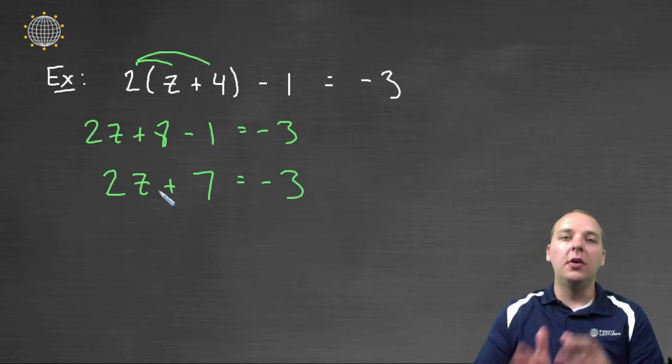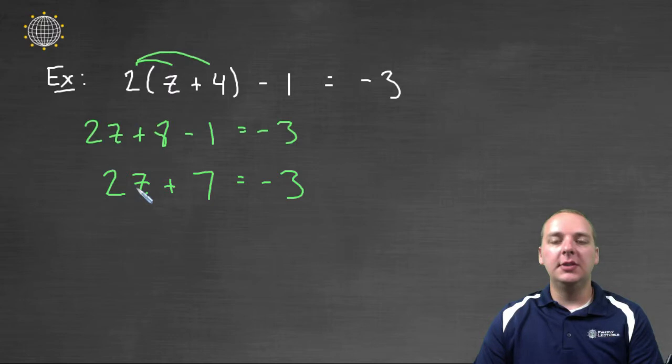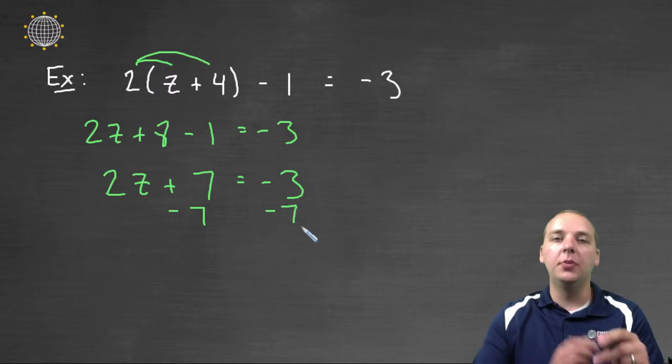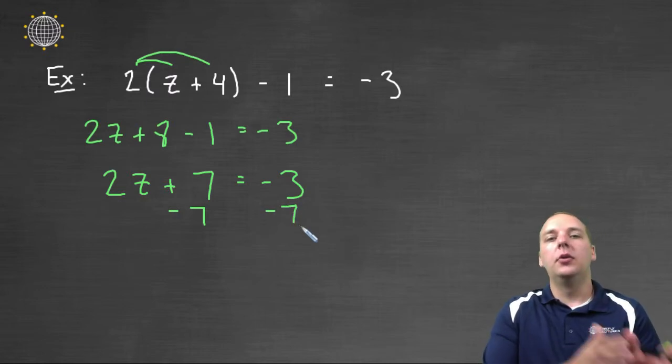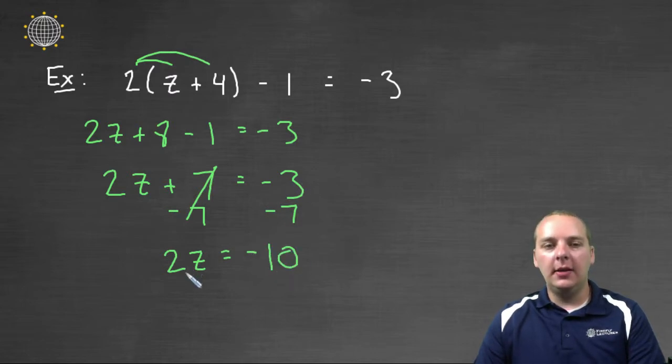Once both sides are simplified, like we have here, we'll move the variables to one side and the constants to the other. The variable z is already on the left, so we'll leave it alone, and we'll subtract 7 from both sides, and that'll move the plus 7 to the right side and it'll become minus 7. Plus 7 and minus 7 cancel on the left, so we'll get 2z = -3 - 7 makes -10.